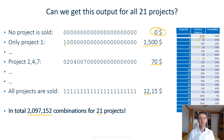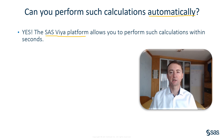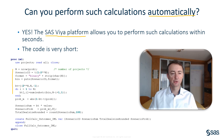So the question is, can you get this output? The answer is yes. And can you perform such calculations automatically — which is important because you do not want to run 2.1 million calculations manually? The answer is yes, because the SAS platform allows you to perform such calculations within seconds, in memory and automatically. And the code for this is also very short — just a few lines of code to get such an output.